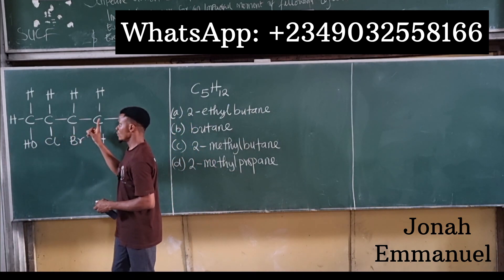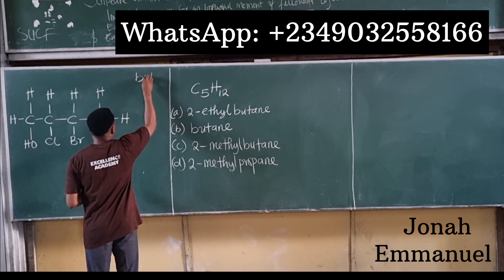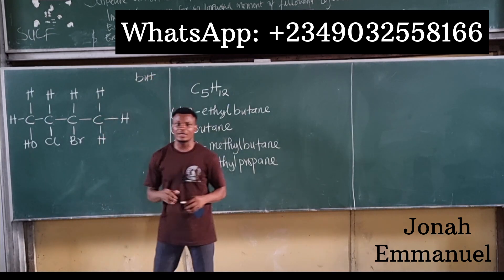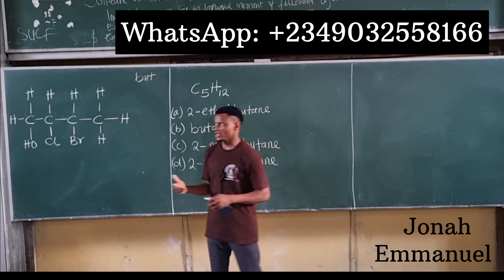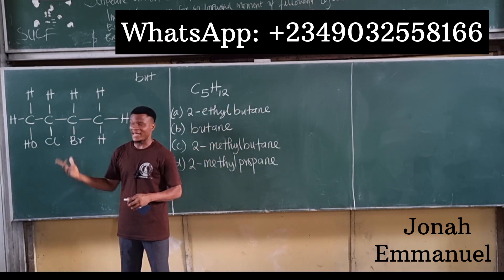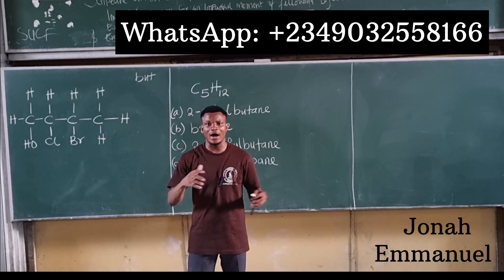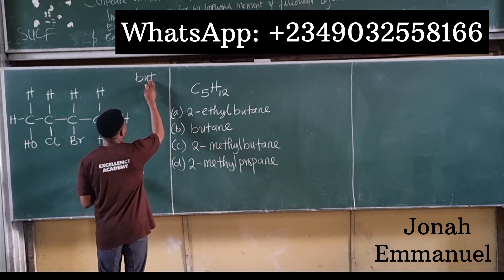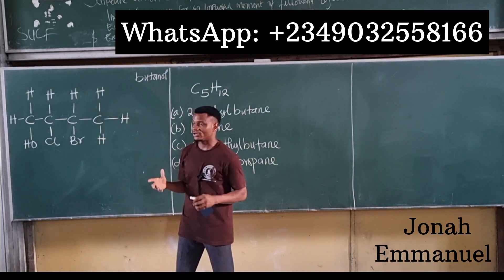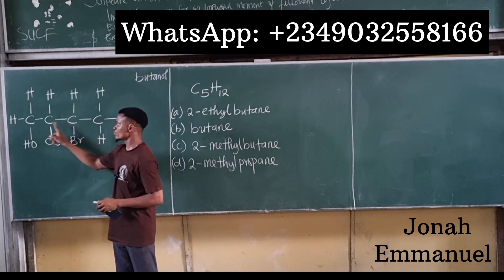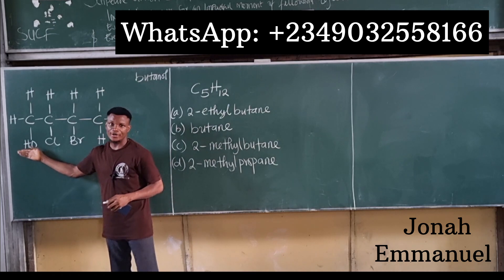Four carbons means 'but-', so I'm having butane as the base. The second step is to identify the functional group. In this case I have an OH group, and OH makes it an alcohol or alkanol. Adding alkanol gives butanol — four carbons plus the OH group.